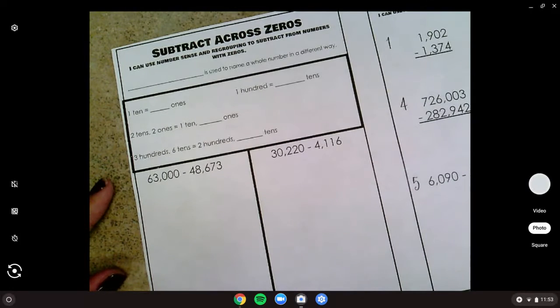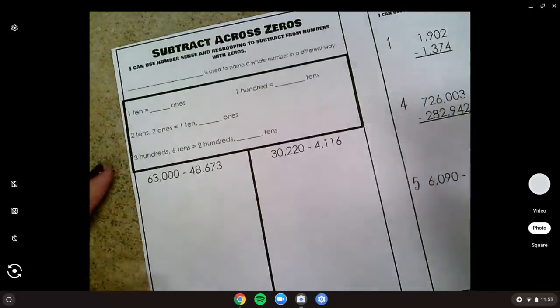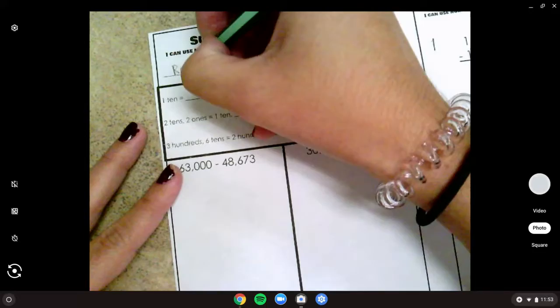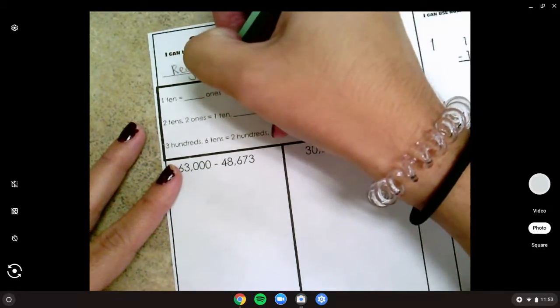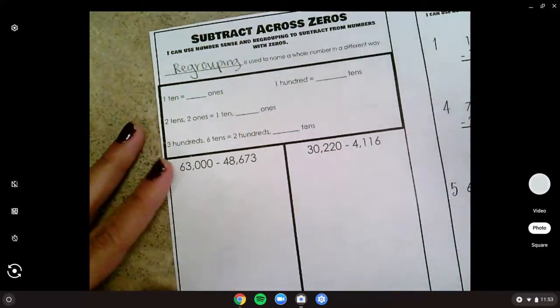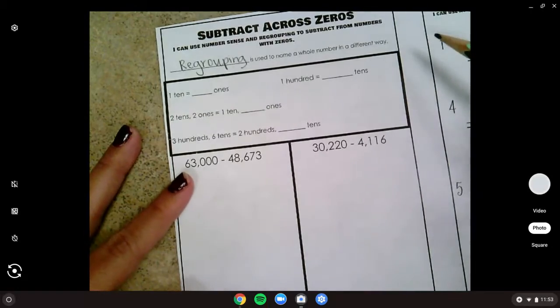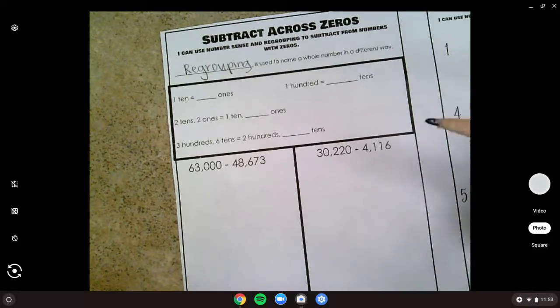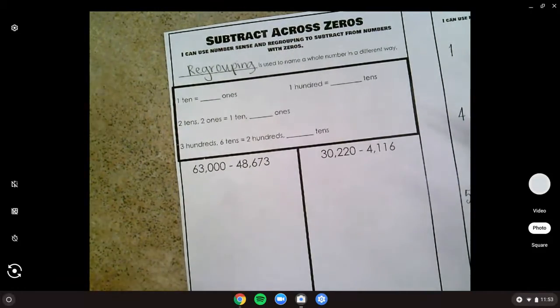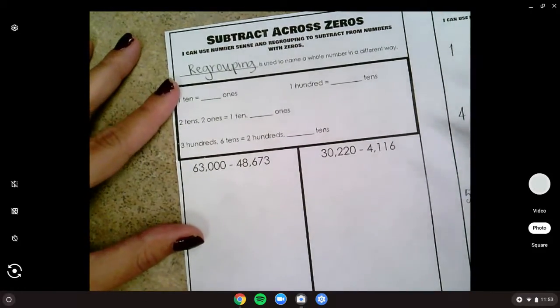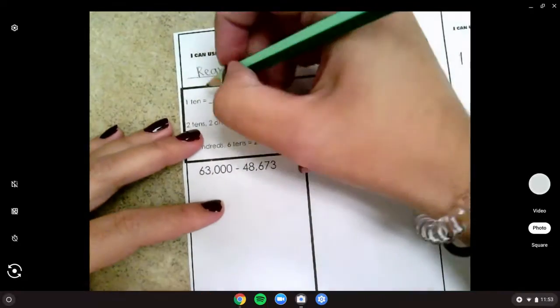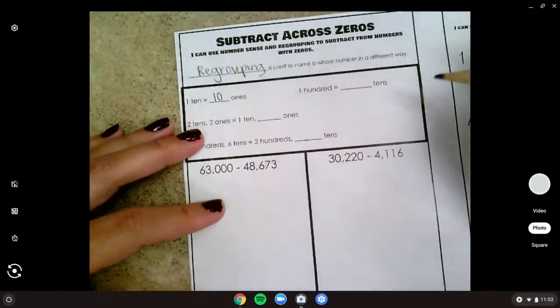Do you know what it's called when you name a whole number a different way? You might not have heard this before, or you might have but you didn't realize that this is what it means. Regrouping is used to name a whole number in a different way. We can always talk about it as borrowing, but we're really renaming. We're regrouping our numbers to make them a new number. So for example, like if we have one ten, we could regroup that to be ten ones.